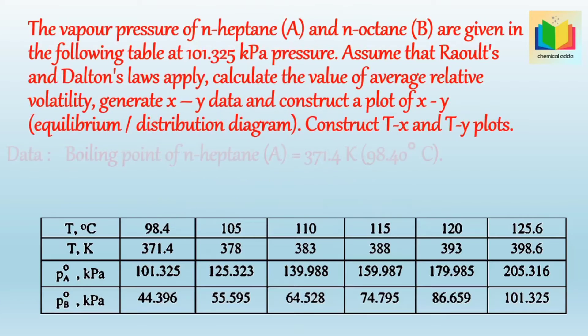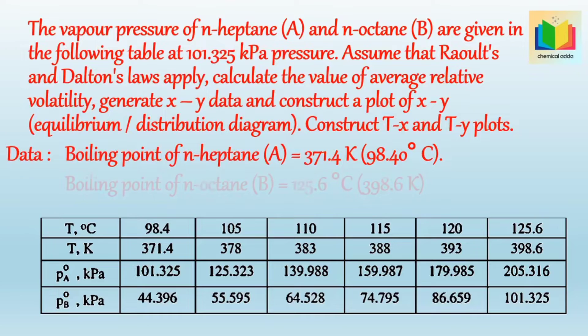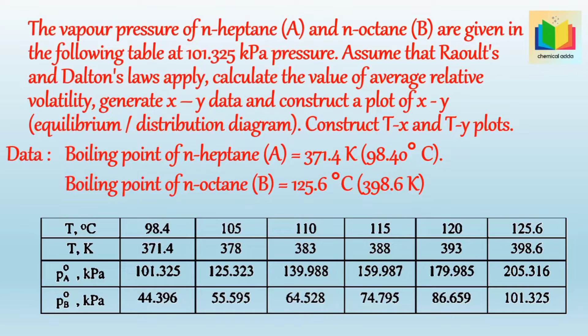The vapor pressure of N-heptane (A) and N-octane (B) are given in a table at 101.325 kilopascals pressure. Assume that Raoult's and Dalton's laws apply. Calculate the value of average relative volatility, generate X-Y data and construct the X-Y equilibrium distribution diagram. Also construct T-X and T-Y plots.